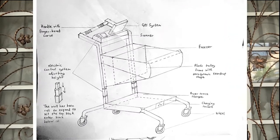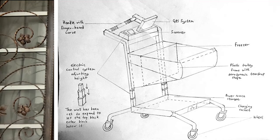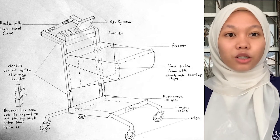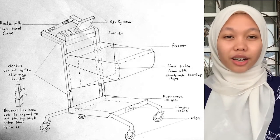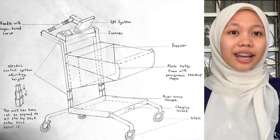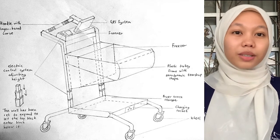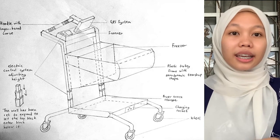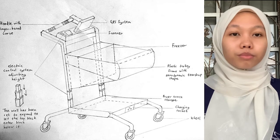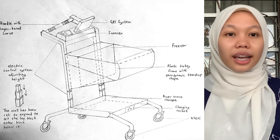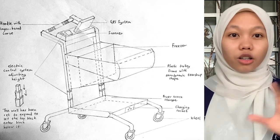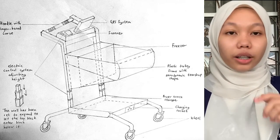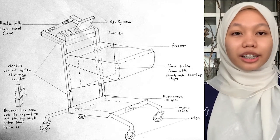Concept 2: this trolley is made of plastic with an aerodynamic shaped frame. For height adjustment, it uses a sliding concept that can be manually controlled. Since it uses quite a large amount of power, it uses dock charging as its power source, requiring recharging at the end of the day. The handle is finger-based for a nice grip. The compartment is a built-in freezer for frozen goods. For user interaction, it has a 15-inch touch screen with GPS and a scanner located at the handle. The movement mechanism is five-inch classic wheels.